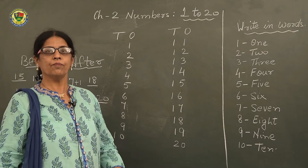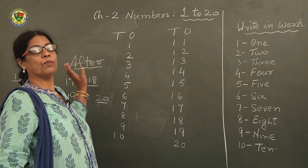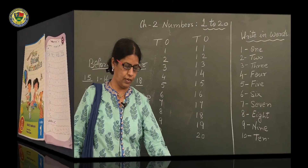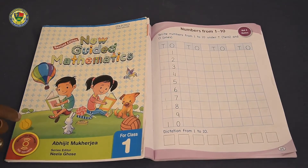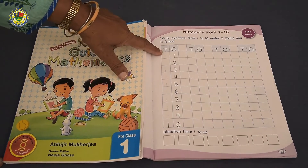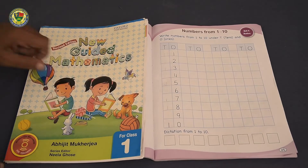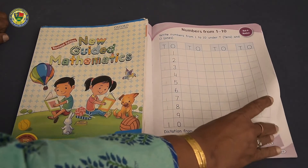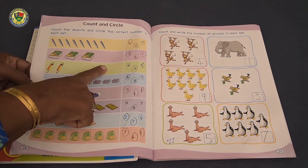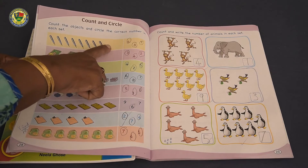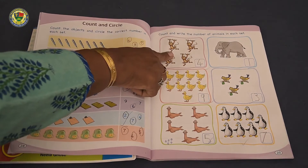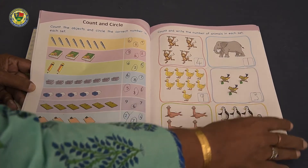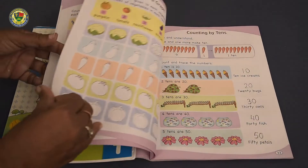So today I have explained you 4 things: before number, after number, bigger number, and smaller number. Now in the textbook they have given you exercises. So you will write in your square line notebook. You have to write only 2 times. Then there is an exercise — count the objects and circle the correct number. 1, 2, 3, 4, 5, 6, 7, 8 — you have to circle 8. And then count the number and write the number of animals in each set — like only 1 elephant or 3 birds. I will send you this worksheet and you have to do it.